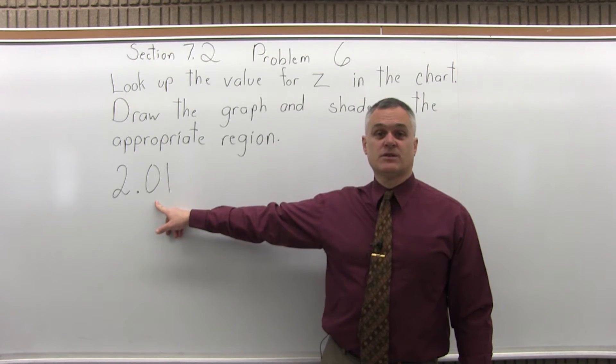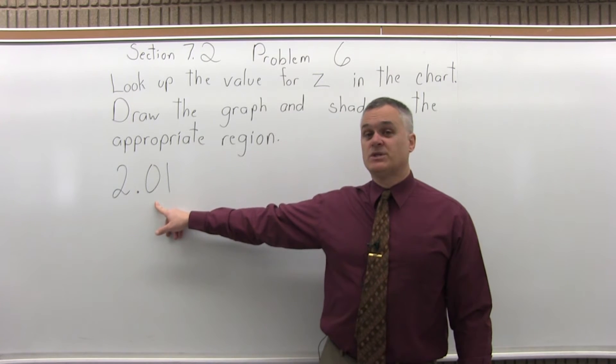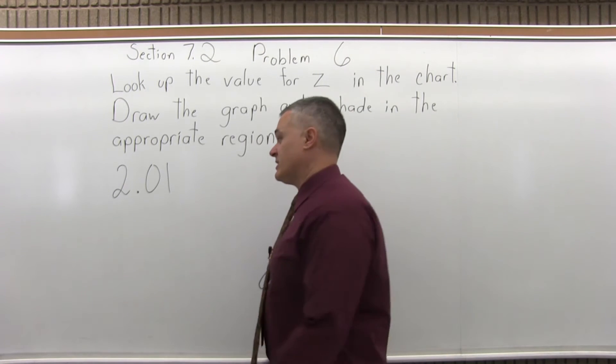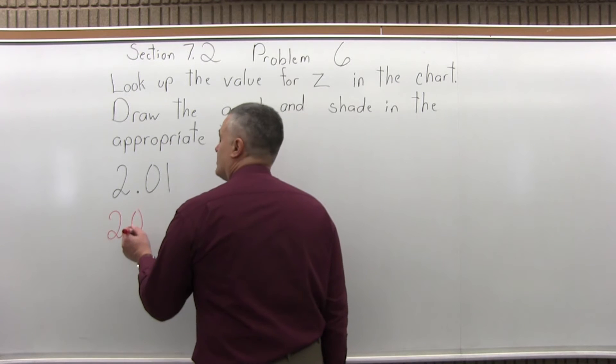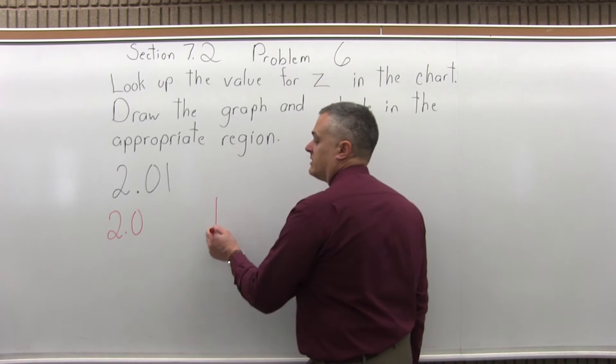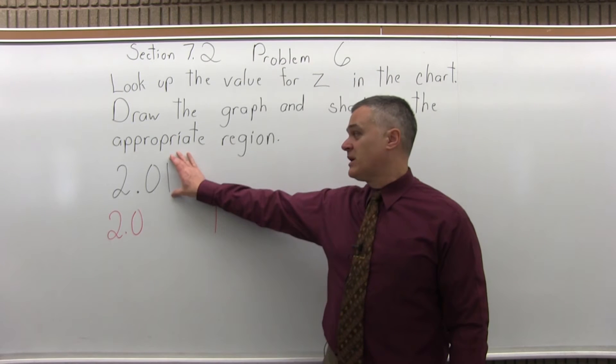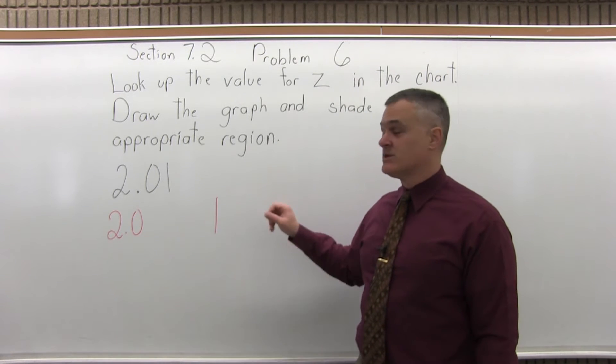But in this case we're all set to go to step number 2 which is split the number into two parts by pulling off the right most digit. The right most digit is the 1 so we'll split this number into 2.0 and 1. That's step 2. I've split the number into two parts by pulling off the right most digit which was the 1.